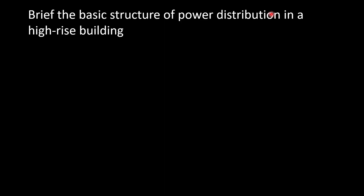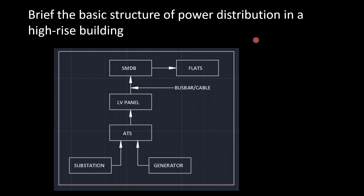Brief the basic structure of power distribution in a high-rise building. If you are applying for a position in the construction field, you will face this question at some point in your career. The form may be slightly varied but the content will be the same. So this is the basic structure of power distribution for a high-rise building. You can see power is coming to the substation from outside. The substation may be internal or situated outside the premises of the project. Then there will be a generator.